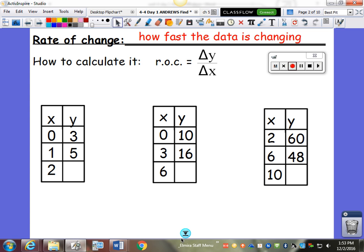So the rate of change is how fast the data is changing. It's also your slope. That's where we're headed with this - the fact that rate of change is the same thing as slope.